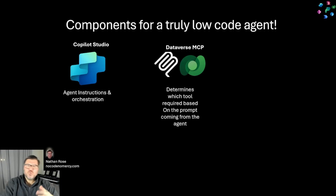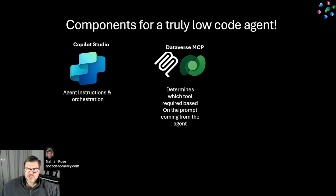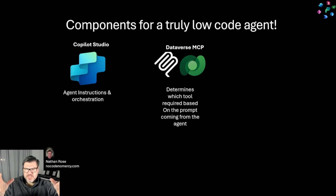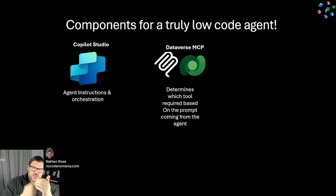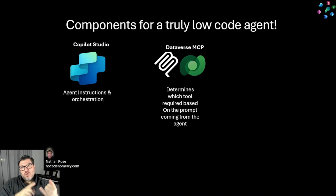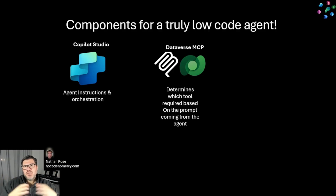It can look up stuff, create stuff, update stuff — and that's just a small subset of what it can do. When it is called by the agent, the agent passes it a prompt with its instructions and what it's being asked to do. MCP responds by determining which of its functions to run in which order to accomplish the task. All you have to do is connect to it and it does all that for you.